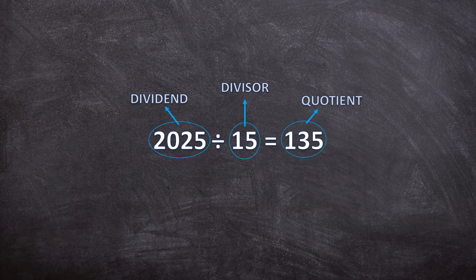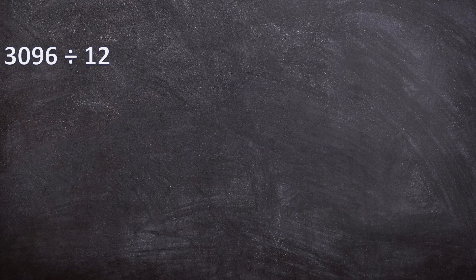Now let's look at our first example. We have 3096 divided by 12. In this video I will be doing 3 different examples — all 3 are 4-digit numbers divided by 2-digit numbers, but they work out in different ways. So make sure you watch all 3 examples so that you are prepared for all the ways this can work out.